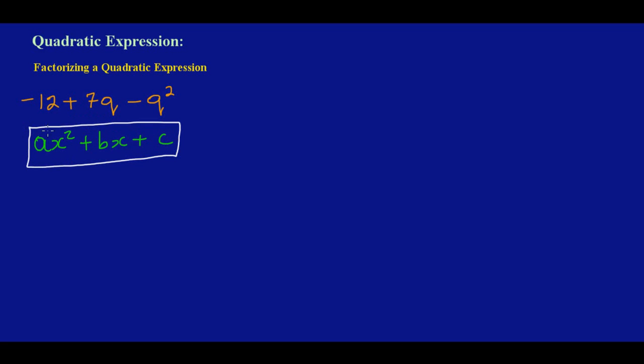And if you notice, the square term in x comes first, then the term in x, and then the constant. Now if you look carefully, our square term is q² but this is a negative q², so you have to remember to bring the sign.